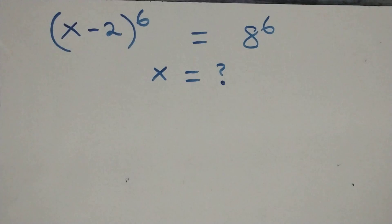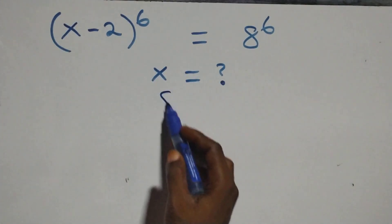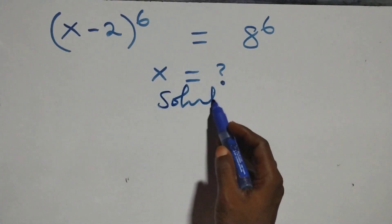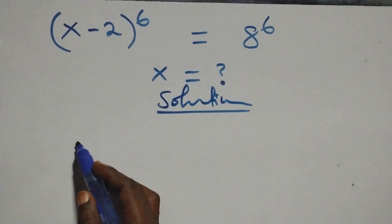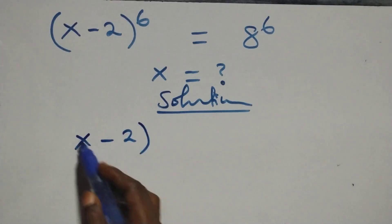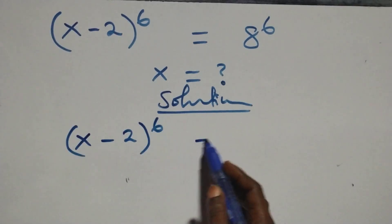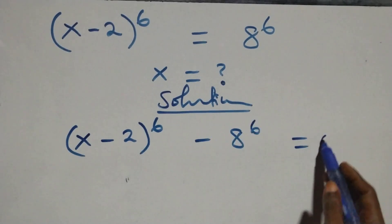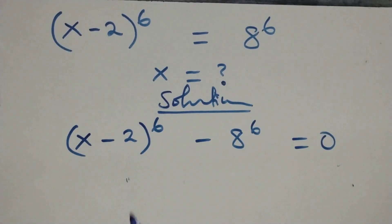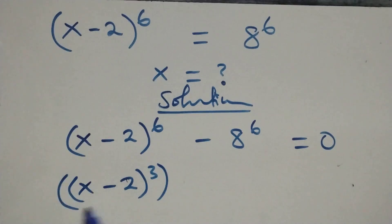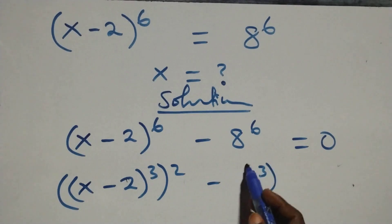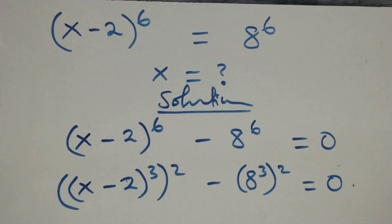Hello, you're welcome. How to solve this nice exponential equation. What we have here: we take 8 raised to power 6 to the left-hand side, and we have x minus 2, raised to power 6, minus 8 raised to power 6, equals 0. We can rewrite this as x minus 2, raised to power 3, raised to power 2, minus 8 raised to power 3, raised to power 2, equals 0.